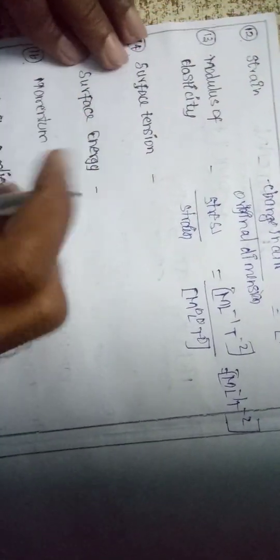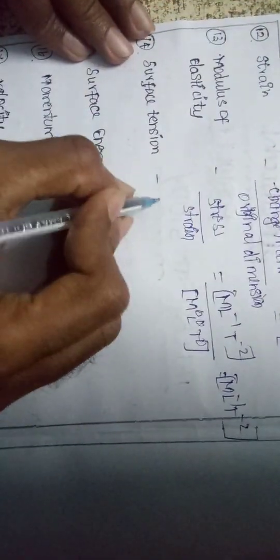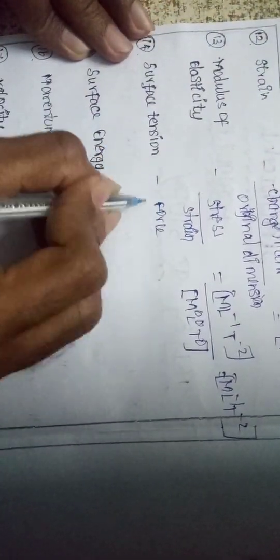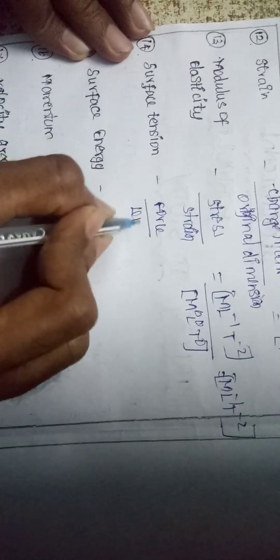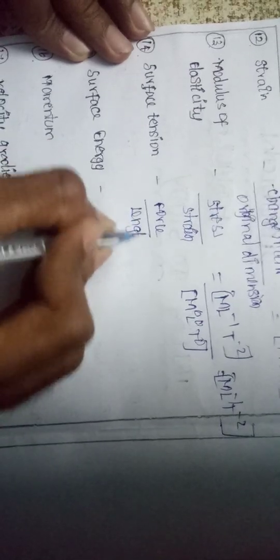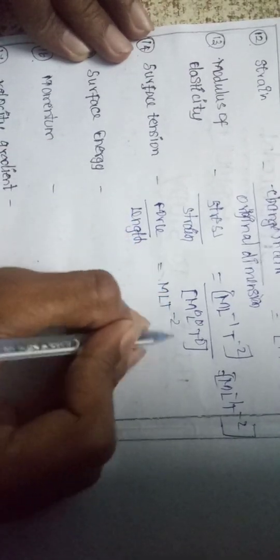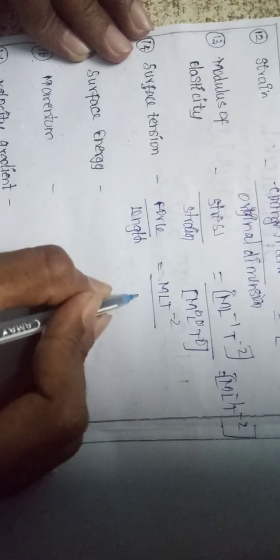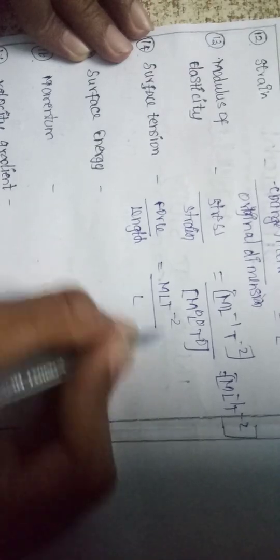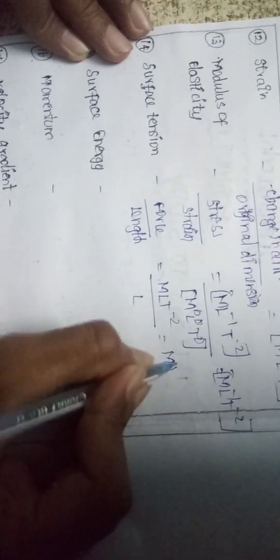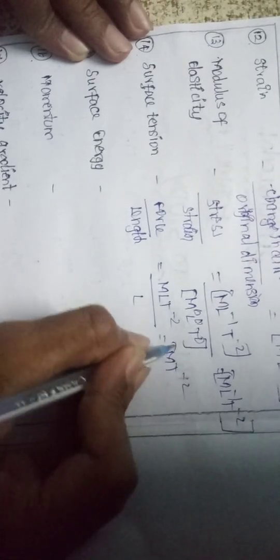Next, surface tension is force by length. Force is M L T⁻², divided by length L, so L cancels giving M T⁻².